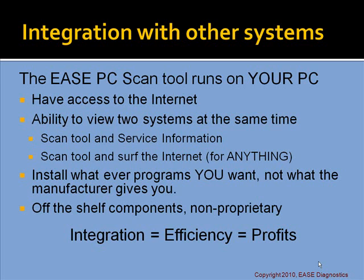The next power feature is integration with other systems. The Ease PC Scan Tool runs on your PC, so you have internet access. You have the ability to view two systems at the same time — for instance, the Scan Tool and service information simultaneously. You can look up DTCs, hop on repair forums, and install whatever programs you want since they're non-proprietary off-the-shelf components. You can go to Best Buy or wherever you like and buy parts for your PC — you don't have to buy them from the manufacturer. Integration equals more efficiency, and the bottom line — that's profits in your pocket.